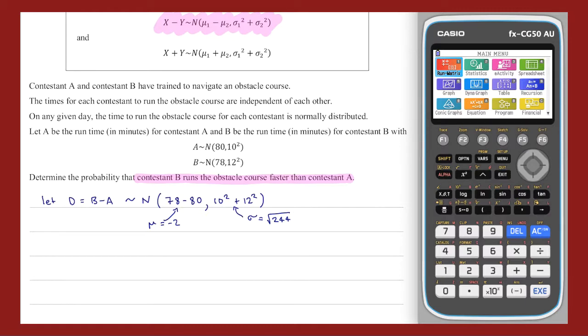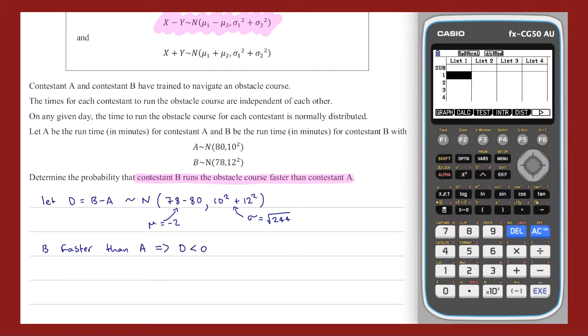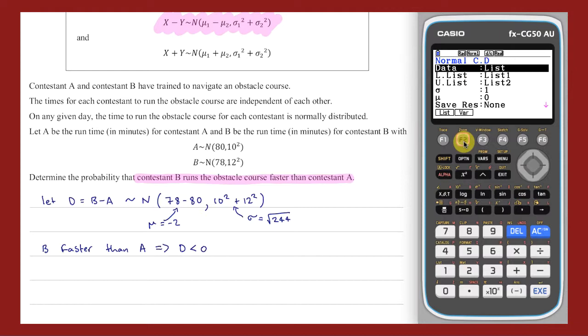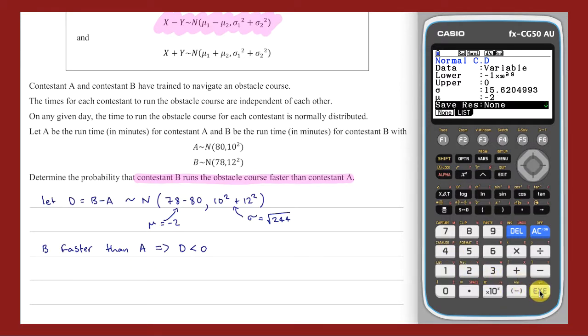With those parameters established, I can calculate the probability that B is faster than A, i.e. B records a lesser time than A, by calculating the probability that D, the difference B minus A, is less than 0. This calculation can be completed on my CG50, using the distribution menu in the Stats app. Select the normal distribution, and perform a cumulative calculation. Set the data to variable by pressing F2. Enter a very small lower bound, an upper bound of 0, and the standard deviation and mean found earlier. This calculation returns a probability of 0.551.